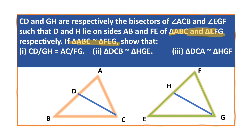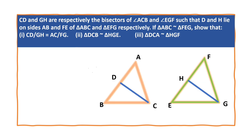show that. There are 3 questions. Now let us solve the first one, that is CD by GH is equal to AC by FG.